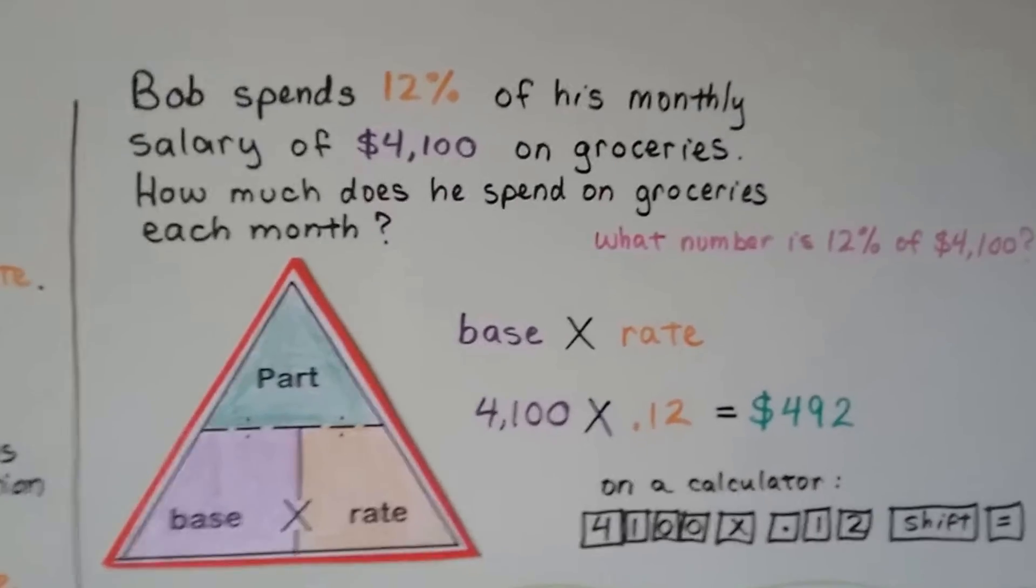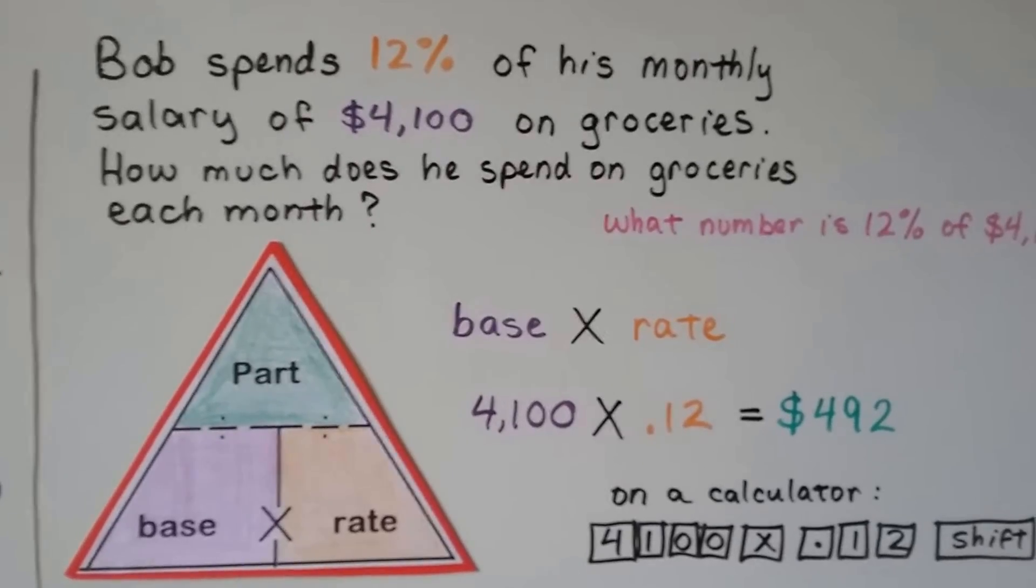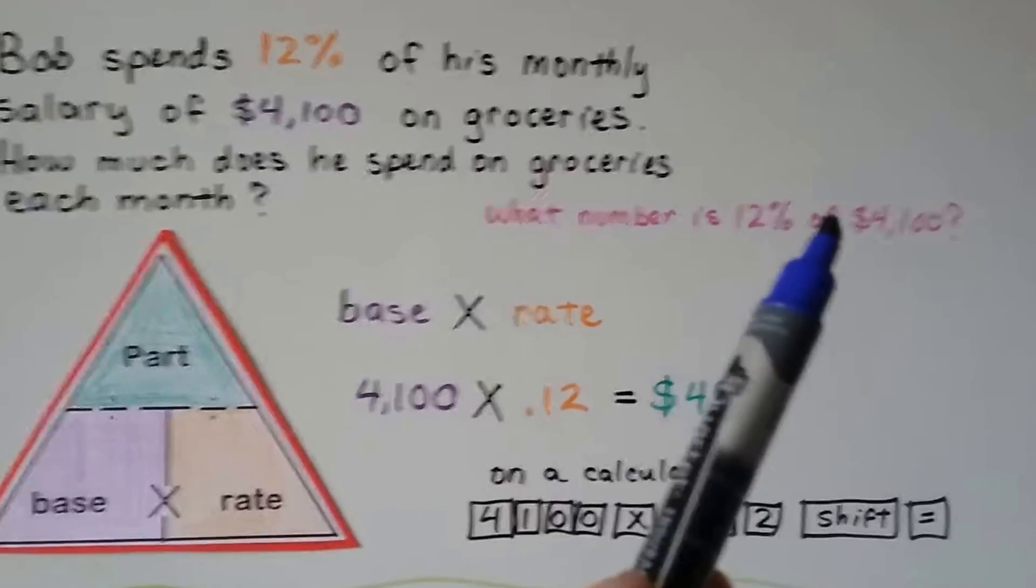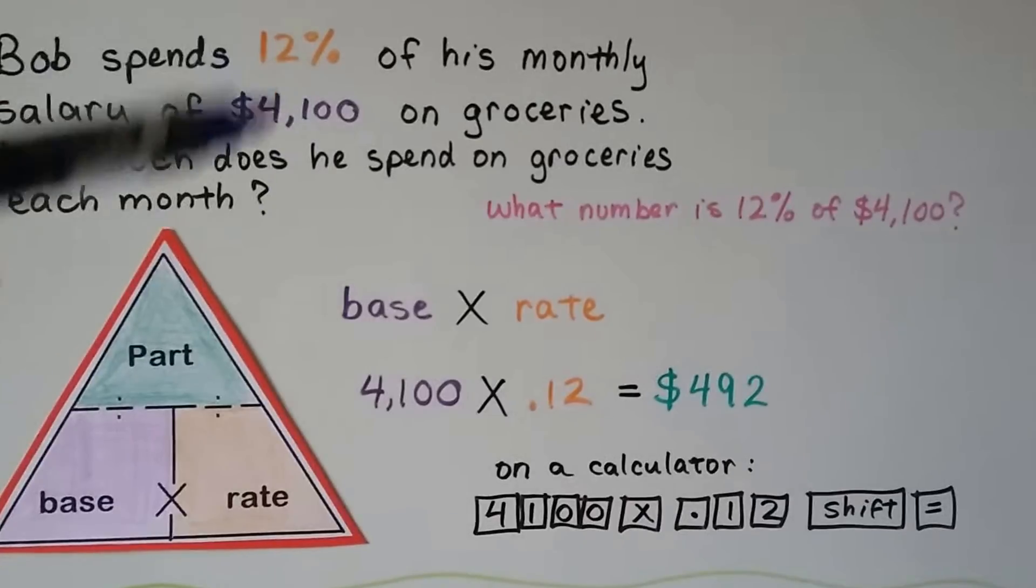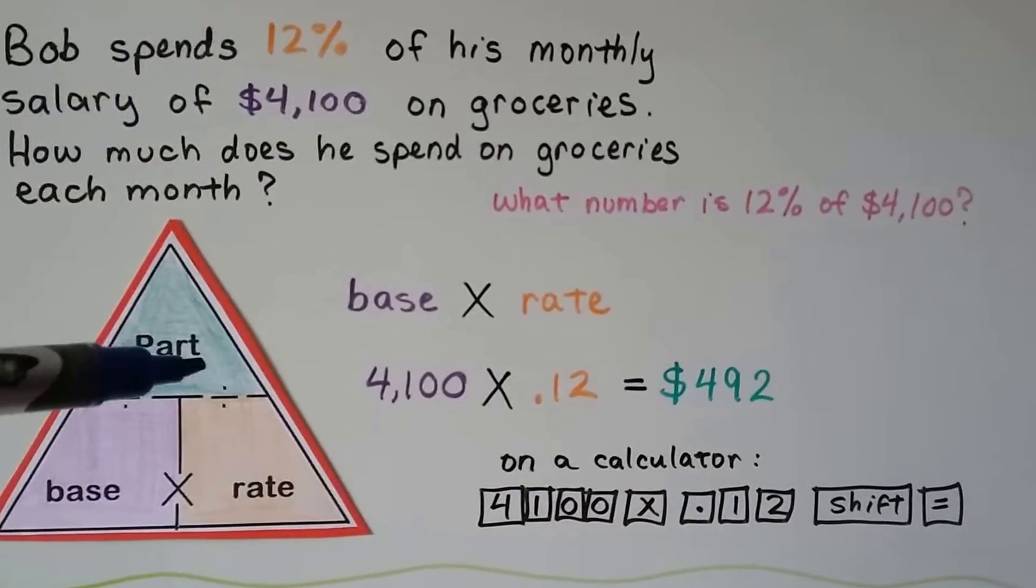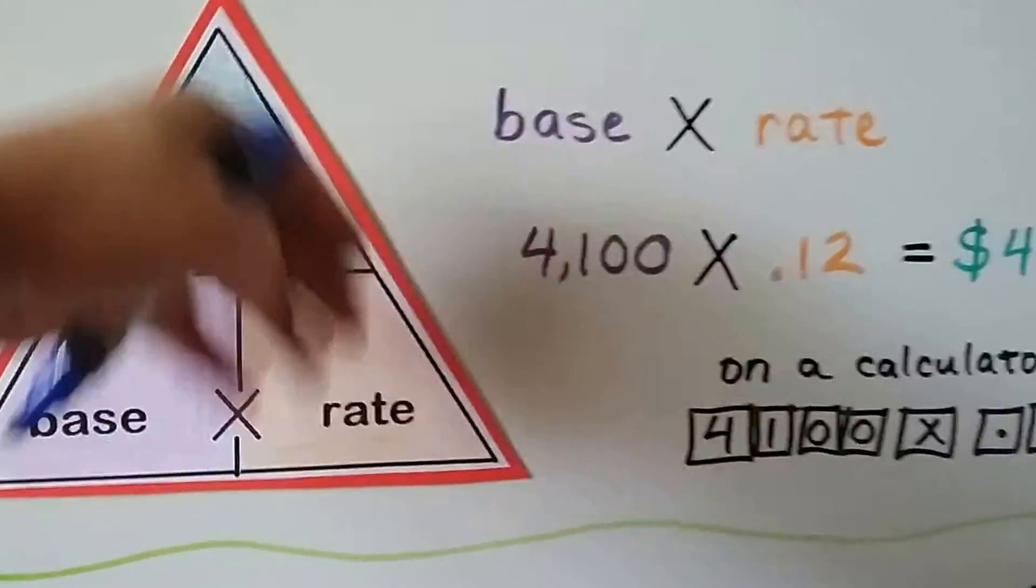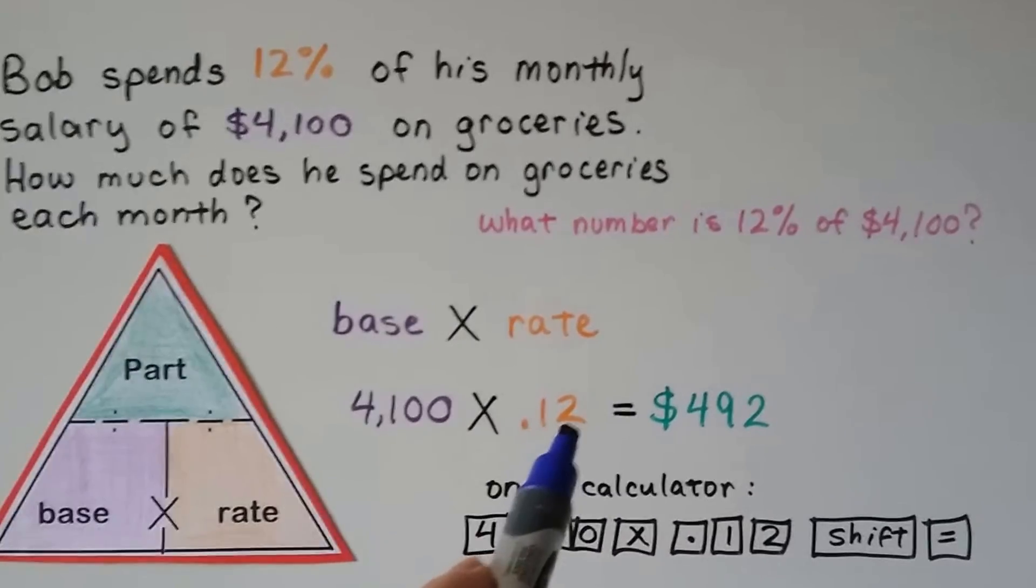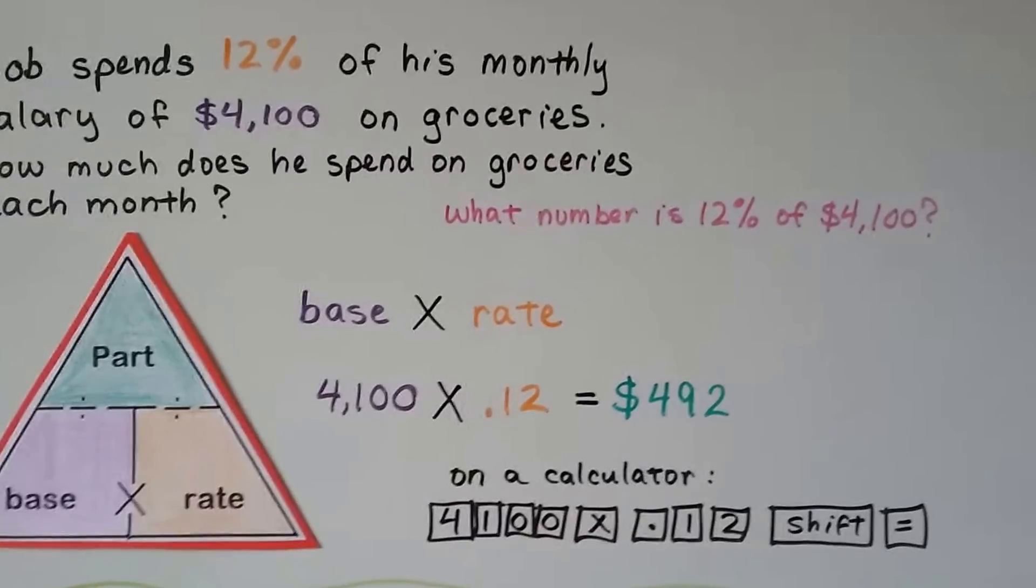Let's try another one. Bob spends 12% of his monthly salary of $4,100 on groceries. How much does he spend on groceries each month? What this is asking is what number is 12% of $4,100? So we see the base here, we see the rate here, but we don't see the part. So we know we're solving for the part. That's the part of the triangle we cover. We know we have to do base times rate. And this 12% needs to be changed to a decimal. So instead of 12%, we have .12. We multiply them and get 492. We have to remember this is a money problem, so we have to put our dollar sign on for the answer.